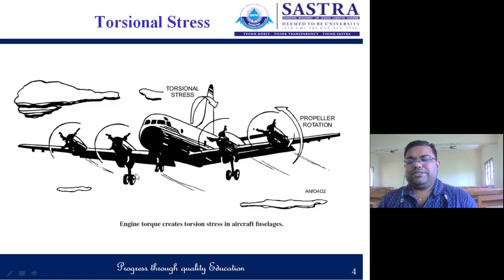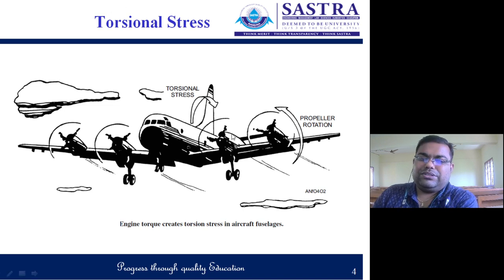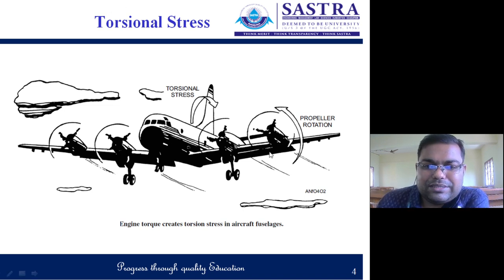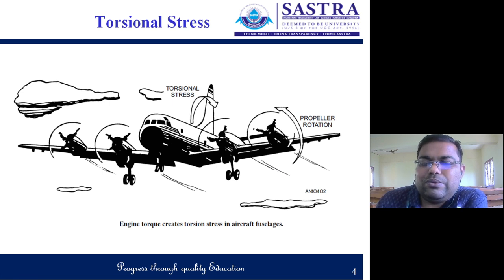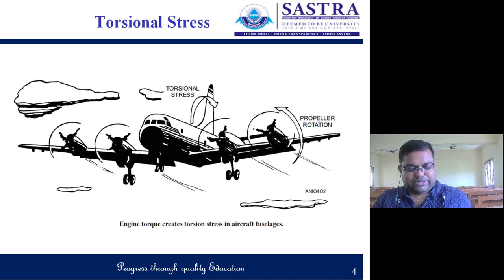This is the pictorial presentation showing aircraft engines inducing torque on the aircraft fuselage. The two engines are situated on either side of the wing, each attached with a propeller. Propeller rotation induces torsional stress over the wing, which is transferred to the fuselage, meaning the complete aircraft is subjected to torsional stress.